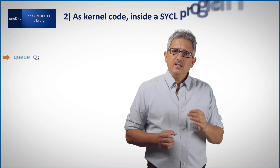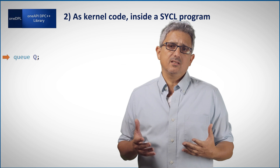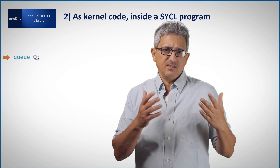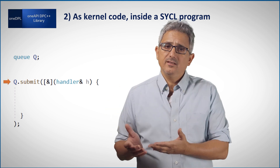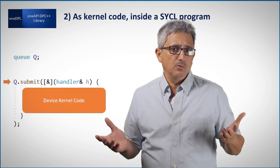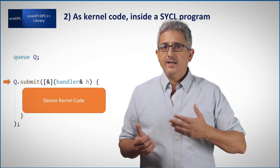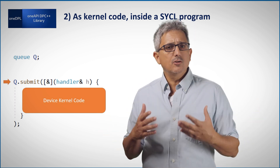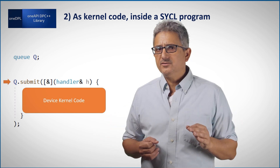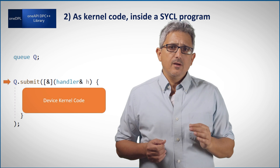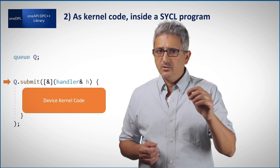The second way is for device kernel code. If I'm using C++ with SYCL and I have a queue — an execution queue to the device — I can submit code to be executed on that device. But what code can that device execute? A GPU or an FPGA, for example, cannot run any kind of code. Well, if you're using primitives from the OneDPL library, they are tested and guaranteed to work on the supported devices.